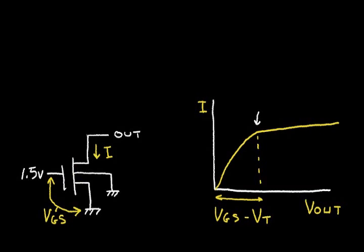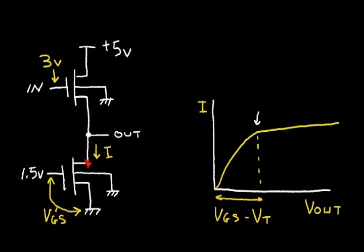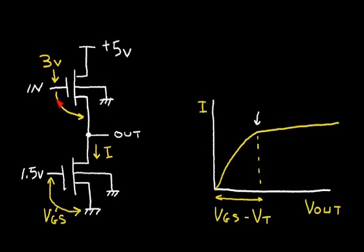Let's add another transistor to the circuit and form the source follower. Here we've added one more transistor that has the same dimensions as the one on the bottom — the same channel width and channel length. This transistor's drain is connected to plus 5 volts, and let's presume that the input is set at 3 volts. We know that a certain current I is flowing in the bottom transistor, and this exact same current flows in the upper transistor. Since these transistors have the same geometry, we would expect the gate-to-source voltage to be identical — also 1.5 volts.